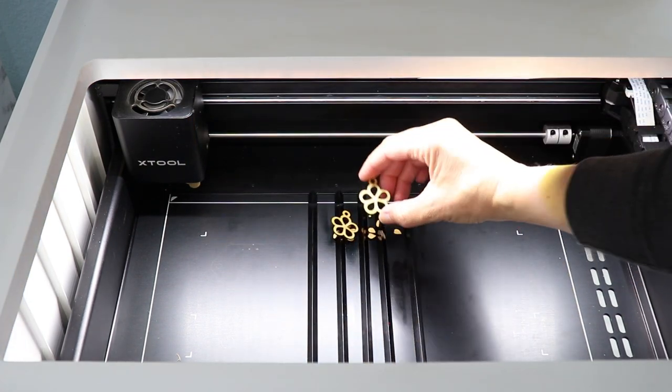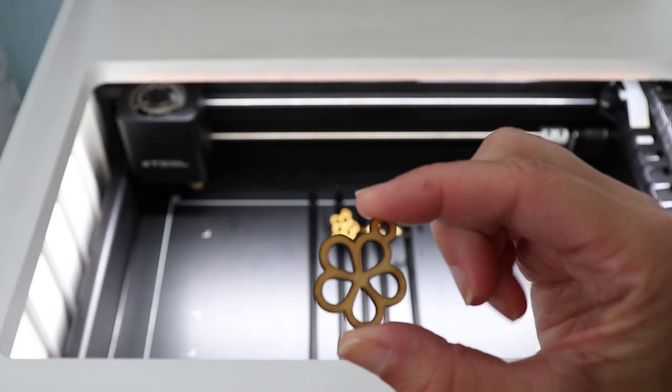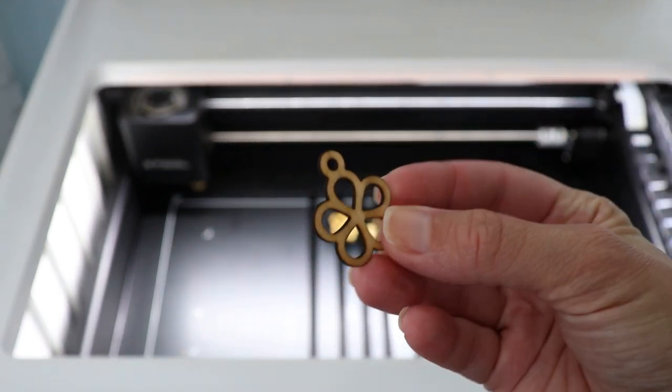And there is our earring piece. I love that it's already stained on both sides so now we can go add the resin.